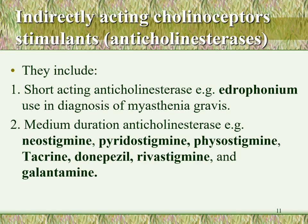The second group are medium-duration anticholinesterases, including neostigmine, pyridostigmine, physostigmine, tacrine, donepezil, rivastigmine, and galantamine. Neostigmine, pyridostigmine, and physostigmine are used for treatment of myasthenia gravis. Tacrine, donepezil, rivastigmine, and galantamine — because they can cross the blood-brain barrier — are used for treatment of Alzheimer's disease.